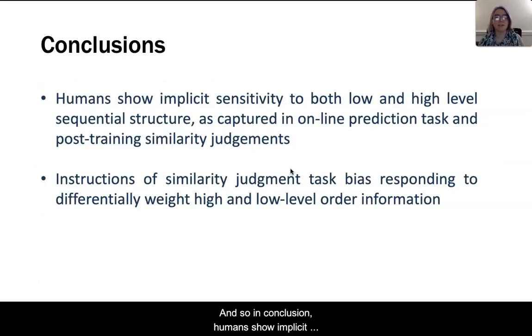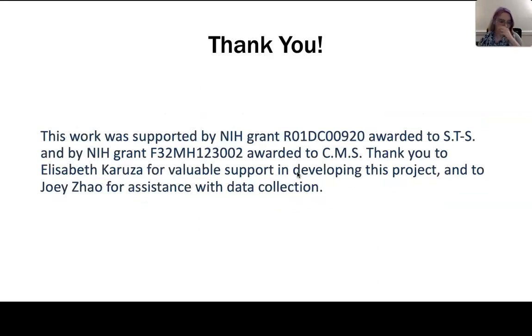In conclusion, humans show implicit sensitivity to both the low and high level sequential structure of the games. We can capture this with our online prediction task and using post-training similarity judgments. Based on the instructions of the similarity judgment task, you can bias responding to differentially weight either the high or low level order information in the games. Thanks so much for listening.